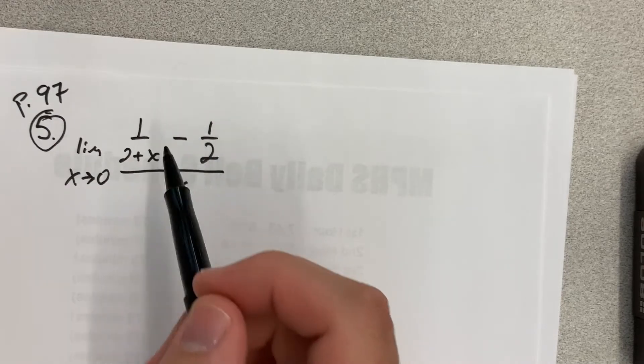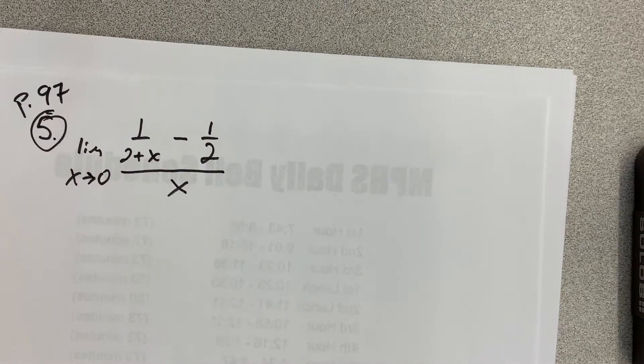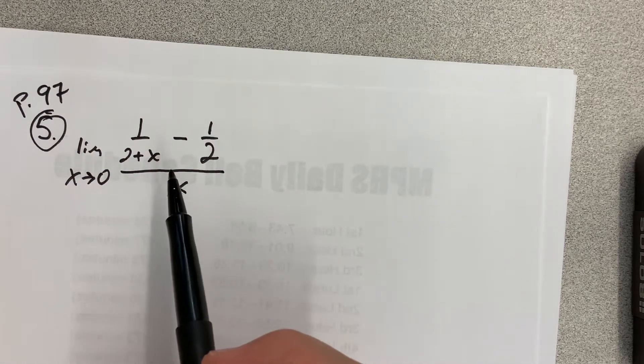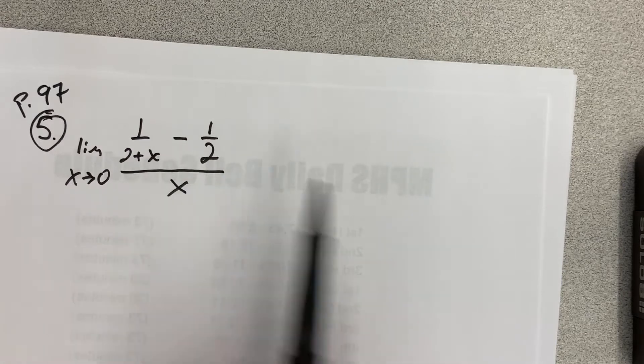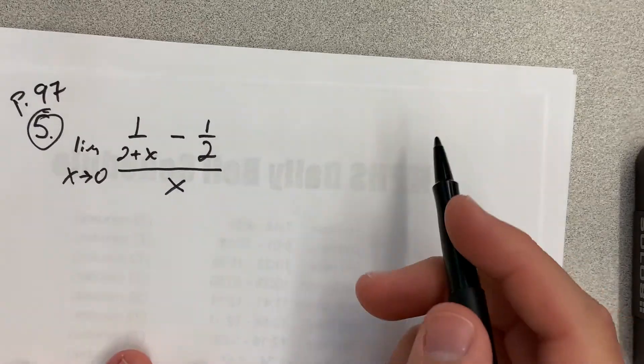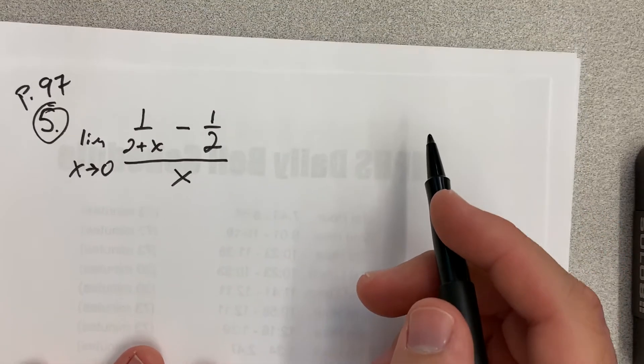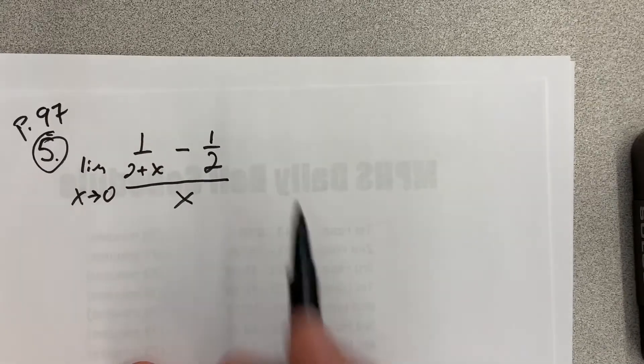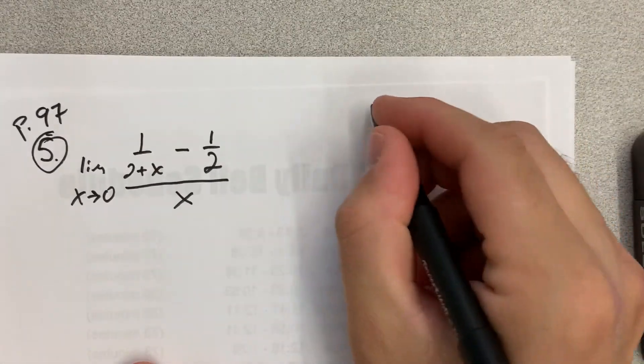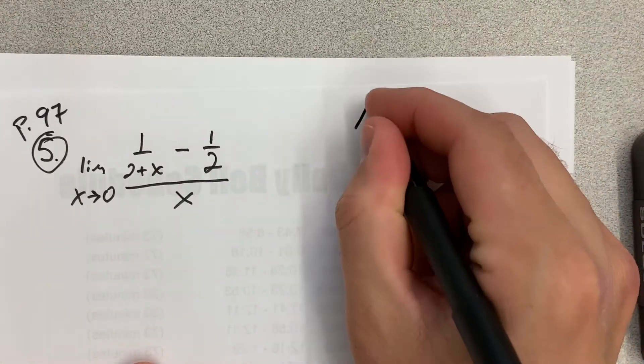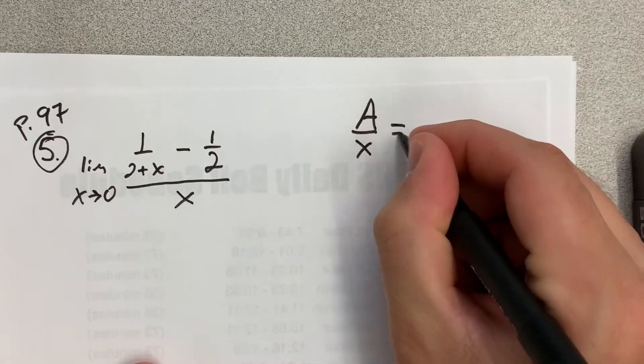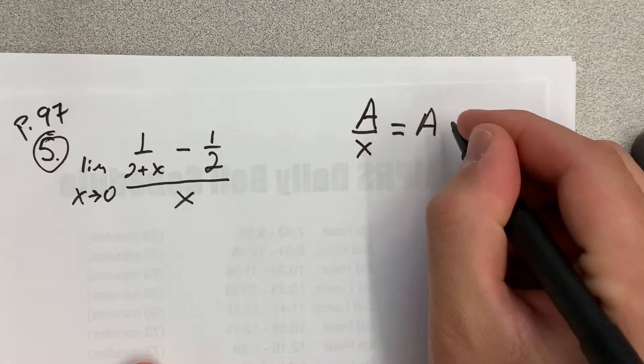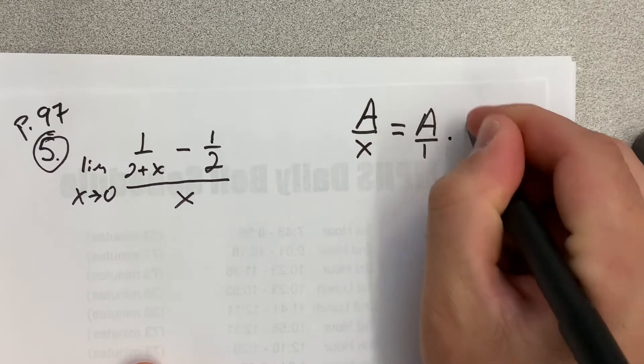One thing that we can do is get rid of this complex fraction because a fraction is bad enough, but inside of another fraction, it's even worse. And there's actually two of them inside of a fraction. So the first thing I'm going to do is use this property: If I have A over x, I can rewrite that as A over 1 times 1 over x.